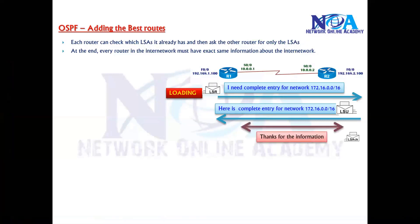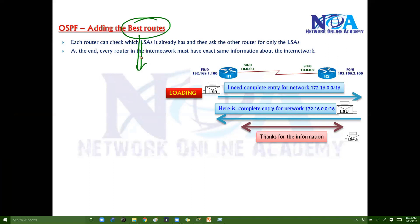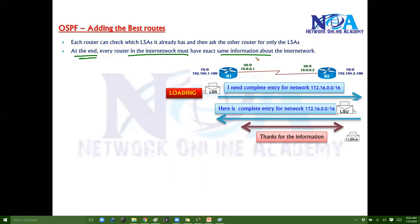Similarly, if Router 2 realizes it has additional information, it will also request and receive that information. This process ensures that all routers have the same database, which is a condition before deciding the best route. Each router checks which LSAs it already has and asks other routers for only those specific LSAs that are not present, so every router in the internetwork has the same exact information.